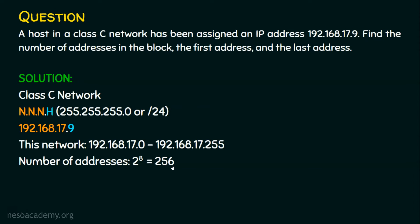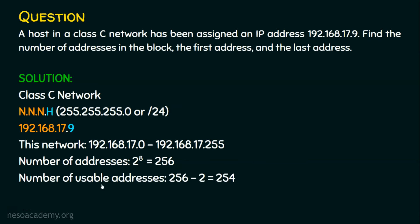Can we use all 256 addresses for hosts? No. Though we have 256 addresses in the block, we cannot use all of them. The first address is the network address and the last address is the broadcast address. So out of 256, we subtract 2, leaving 254 usable addresses. The total number of possible addresses is 256, and the number of usable addresses is 254.